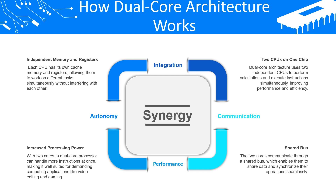For performance, with 2 cores a dual core processor can handle more instructions at once, making it well suited for demanding computing applications like video editing and gaming. Finally, for communication, the 2 cores communicate through a shared bus, which enables them to share data and synchronize their operations seamlessly.